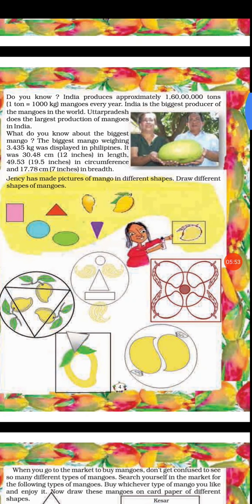Did you know India produces approximately 1,60,00,000 tons of mangoes every year? That's a huge production. 1 ton is equal to 1,000 kg. In the whole world, India is the biggest producer of mangoes, but within India, Uttar Pradesh does the largest production of mangoes.